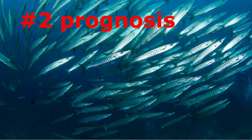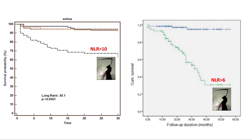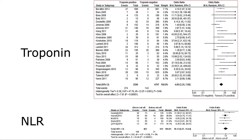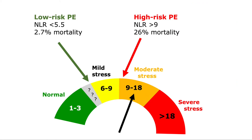Another use of NLR is prognostication among patients with the same diagnosis. For example, in pulmonary embolism, many studies find NLR to be a stark predictor of mortality — it may be superior to troponin. The optimal cutoff remains unclear; however, an NLR over 9 suggests increased mortality.